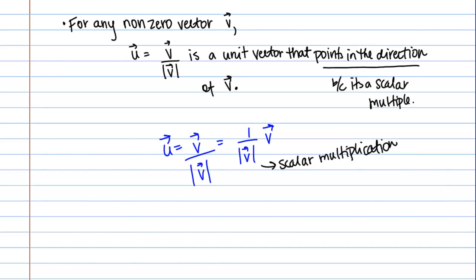To think about that, let's think about what the magnitude of u is. When we talked about scalar multiplication by components just a minute ago, we said that the magnitude, this is going to be the magnitude of 1 over the magnitude of v times v.